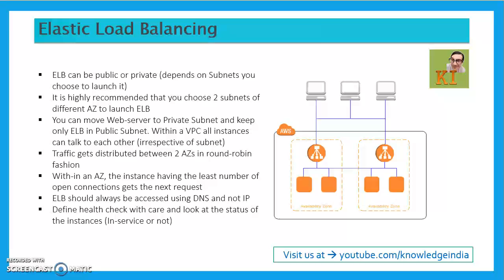When creating the ELB, you choose the subnets it will use, and whether those subnets are public or private determines whether your ELB is public or private. It is highly recommended that you choose two subnets in two different availability zones, because AWS recommends running anything across two different availability zones to follow the principle of high availability.